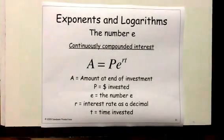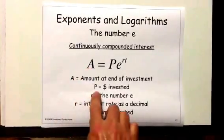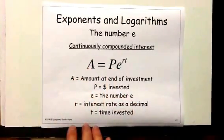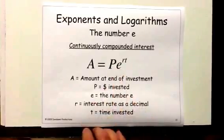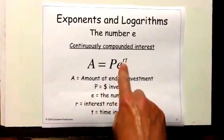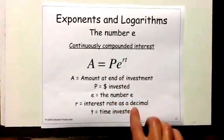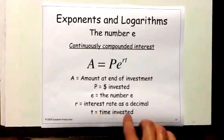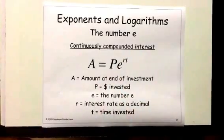A is the amount at the end of the investment. P is the amount that's invested. e is that magical number e. R is our interest rate as a decimal. And T is the time that our investment is left in the bank growing. That's how we develop the continuously compounded interest formula.